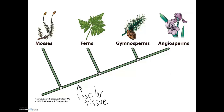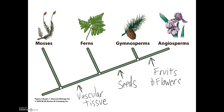The next adaptation on our list is the development of seeds. Mosses and ferns are not able to produce seeds — they reproduce by spores instead. And the last adaptation is the development of fruits and flowers. Angiosperms are the only plant group with this adaptation. Mosses, ferns, and gymnosperms do not produce fruit and flowers.